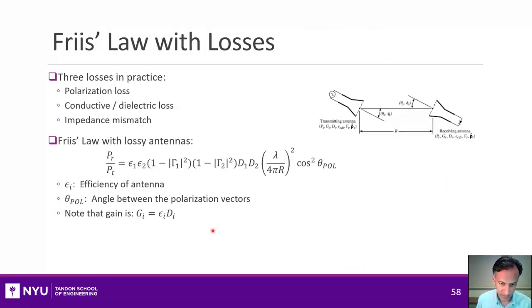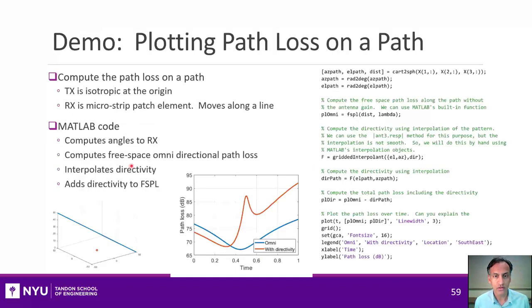When you put all those together, all these losses, you get sort of a modified version of Friis' Law. So the terms here is Friis' Law. But we have a loss from the loss in polarization. We then also have the losses associated with the impedance mismatch of both the transmitter and receiver as well as inefficiencies in the amplifier, which could be the conductive or dielectric losses that we mentioned in the previous section.